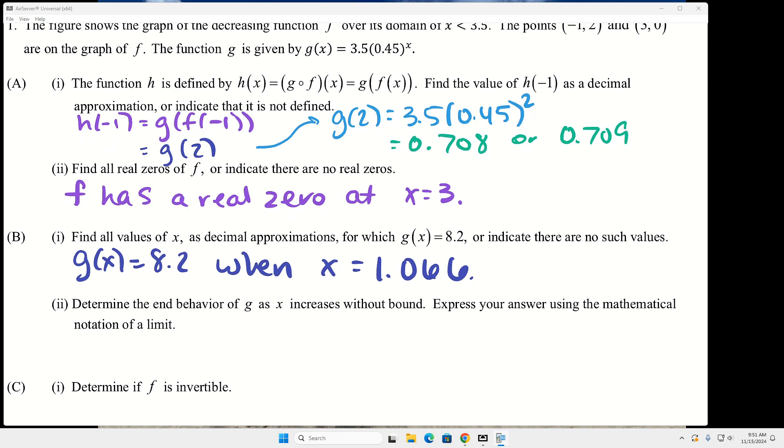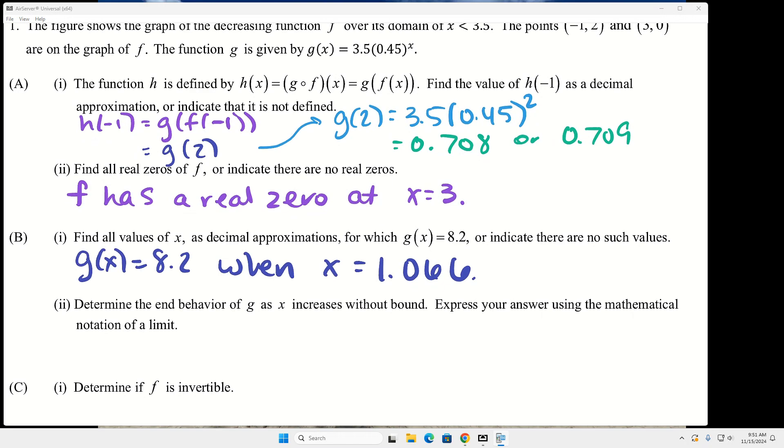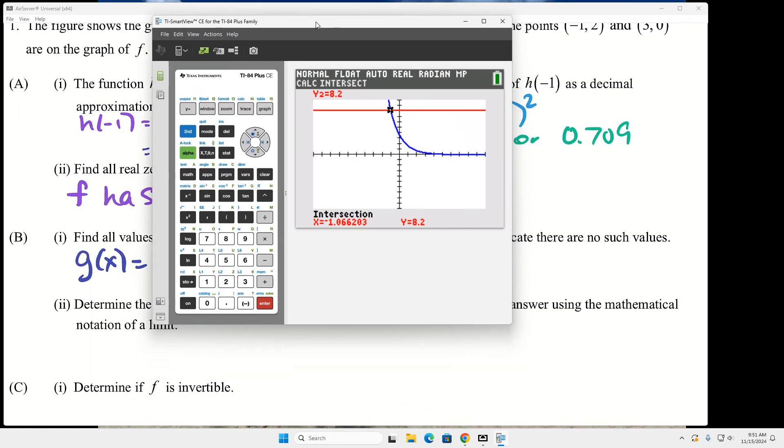And then part two on b, we've definitely done this before. I think when we did it before, it was with rational functions, and the graph actually kind of led you astray on those rational functions. In this case, the graph does not lead you astray. We want to know the end behavior of g as x increases without bound. So when we're looking at the graph, the blue graph is g. So increases without bound - which side of the graph is that? The right side. So on the right side, what is g approaching? Zero.